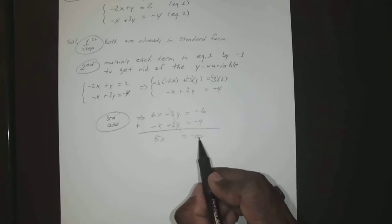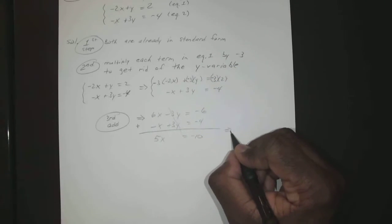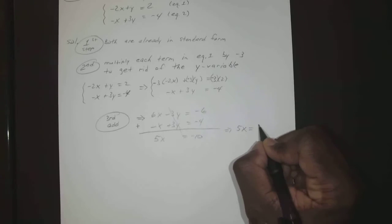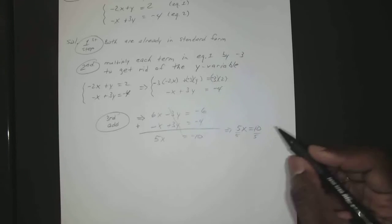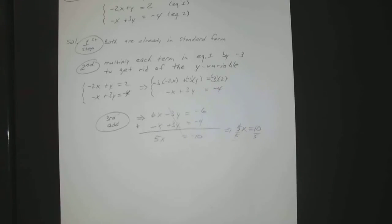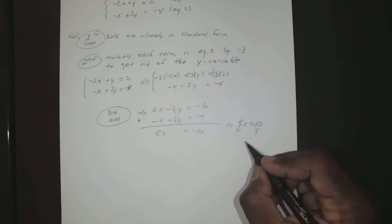-6 - 4 is -10. So that gives us 5x = -10, and divide both sides by 5. Anything divided by itself is just 1, so we have x = -2.